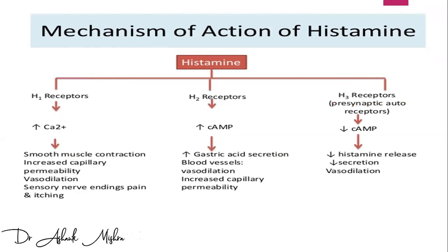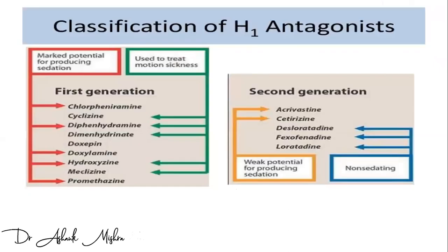H1 receptors also cause increased permeability, vasodilatation, and stimulation of sensory nerve endings responsible for pain and itching. H3 receptors are presynaptic receptors and have an inhibitory action on histamine release.